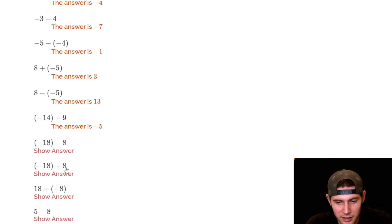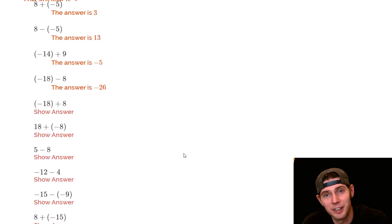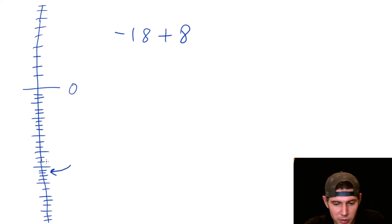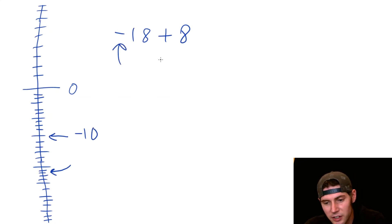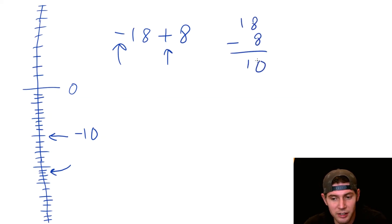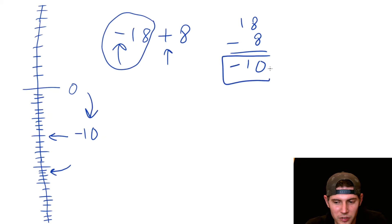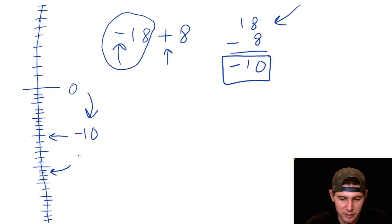Next: negative eighteen plus eight. We start eighteen in the hole and then plus eight means going up eight. Counting it all out gives negative ten. Another way to think of it: the negative and the positive are working against each other, so we subtract to get ten, and since eighteen is larger it pulls the result down, giving negative ten. Either way we get negative ten.